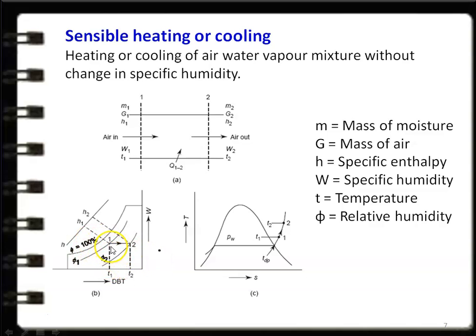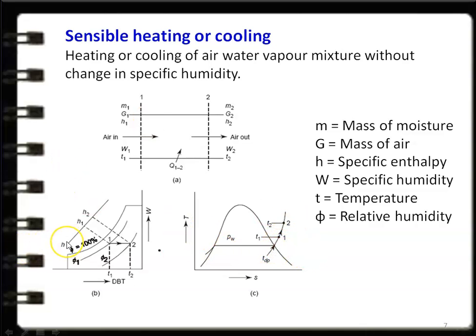Other properties such as relative humidity and enthalpy are changing, but specific humidity is constant with the increase in dry bulb temperature. The temperature-entropy diagram indicates the process 1 to 2 as sensible heating. The reverse process, where temperature decreases at constant specific humidity, is called sensible cooling.